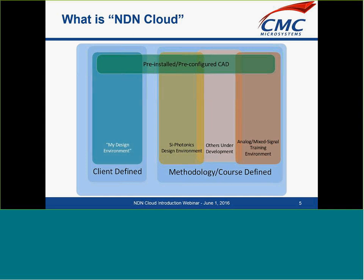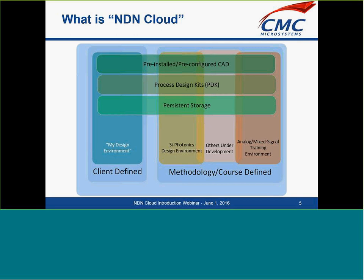The thing that differentiates CMC's NDN cloud from, say, Amazon — besides the academic subsidies — is that we configure the environment with things that will really accelerate research. We've already pre-installed the CAD tools that CMC supports and provides. We've also pre-installed and configured process design kits when we can distribute them. Another big differentiator is persistent storage. This is a predominantly virtual environment, so you can create your virtual machine for, say, a week. But you can find a file system to save your work, and when your virtual machine is gone, you can continue your work next time on a new machine — the file system will still be there.